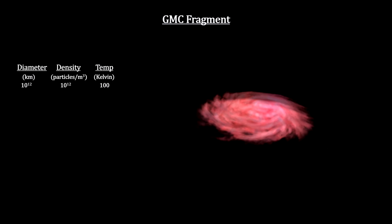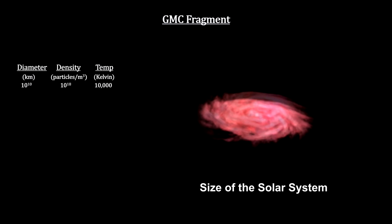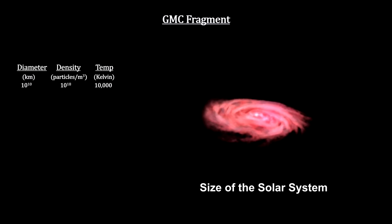Another 100,000 years and the core temperature reaches 10,000 degrees Kelvin. At this temperature, the object begins to shine by normal, non-nuclear means. It is now a protostar. So far, the core has only about 1% of its final mass.